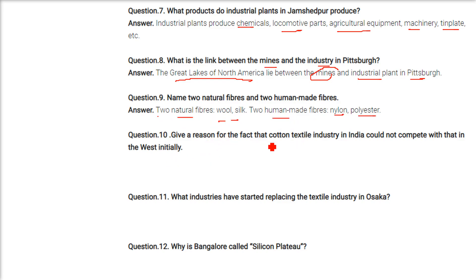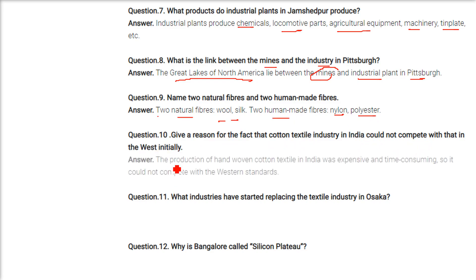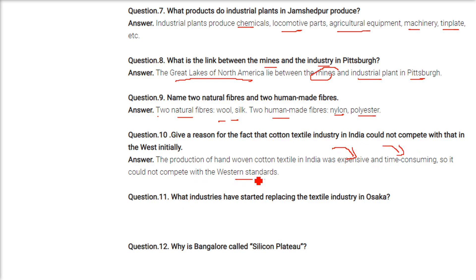Name a reason why the cotton textile industry in India could not initially compete with western standards. The production of hand-woven cotton textile in India was expensive and also time-consuming, so it couldn't compete with the west where industrialisation meant machinery and automation were used.